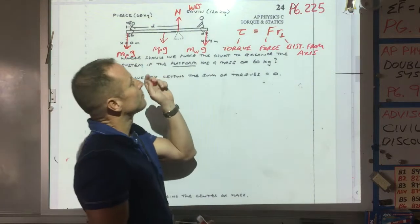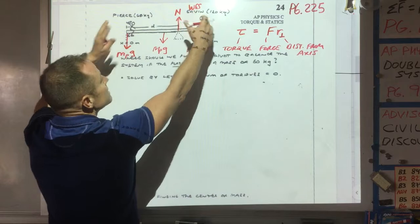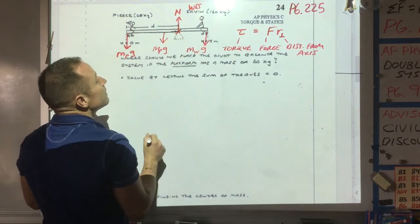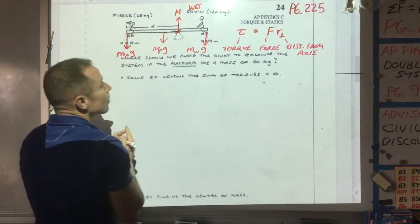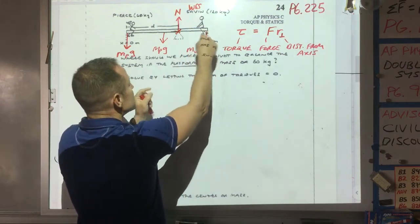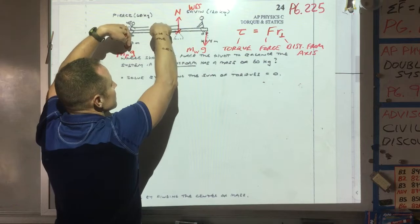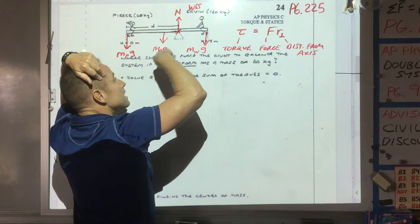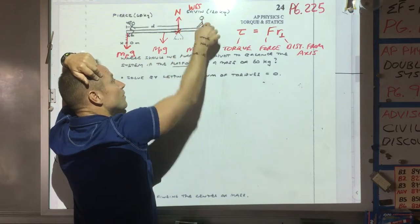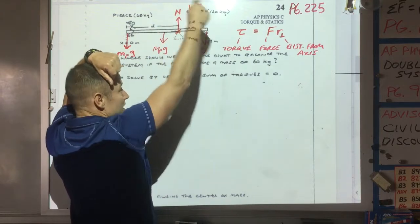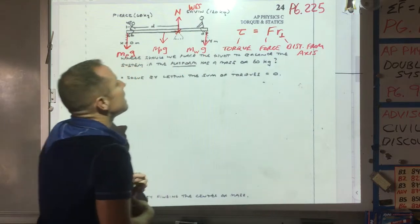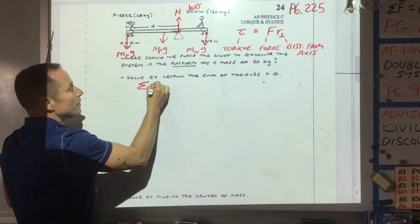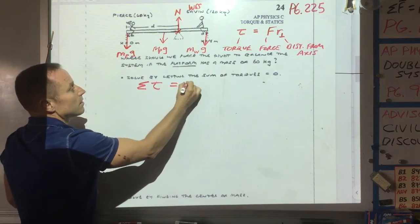So what we're going to do is if this thing is to be balanced, then that means around this pivot the sum of what's called the torque should be zero. The idea is that these two forces are going to try to make the thing rotate counterclockwise, and that's going to be balanced by this force from Wes's weight, which is going to make it rotate clockwise.